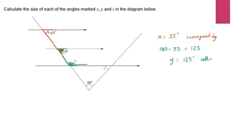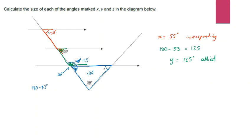Y is 125 degrees because it's allied. Finally, Z is part of the triangle at the very bottom of the diagram. I know angles in any triangle add up to 180 degrees. I need this angle next to Y — since Y is 125 degrees, taking 125 away from 180 leaves 55 degrees. That 55 is also corresponding with the angles above it. In the triangle I now have 80 degrees and 55 degrees, which add to 135 degrees.